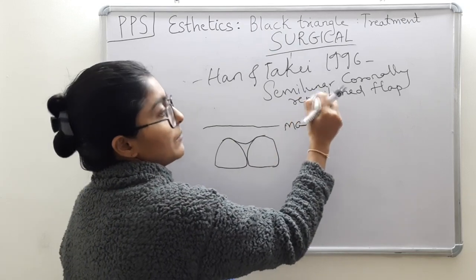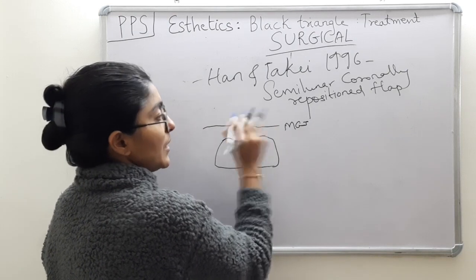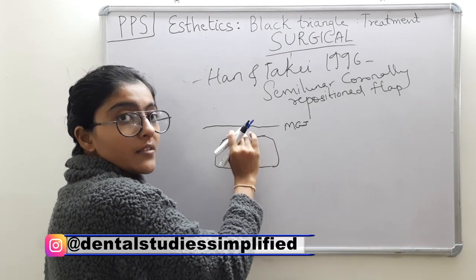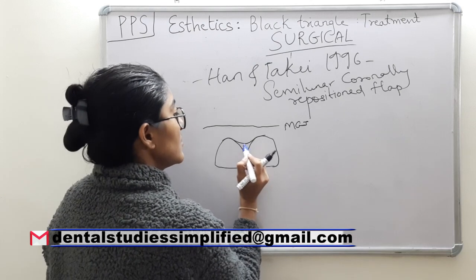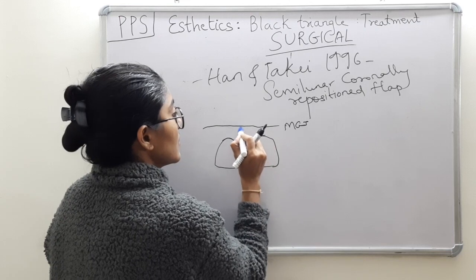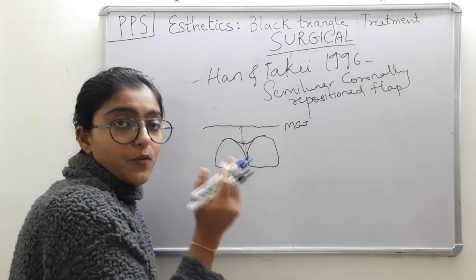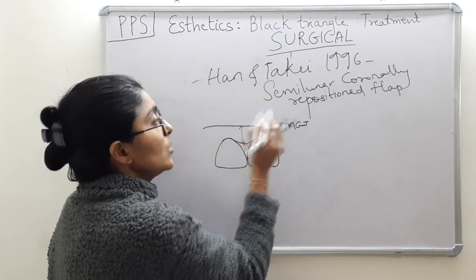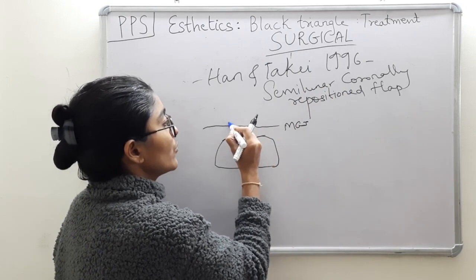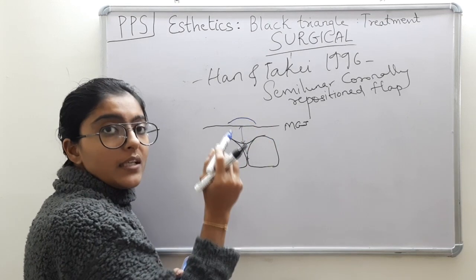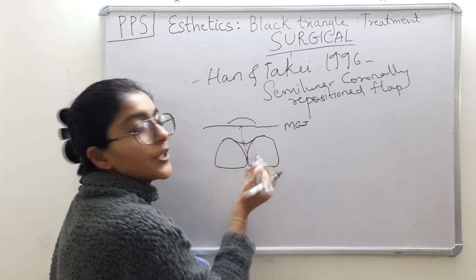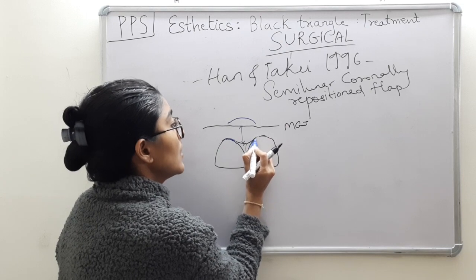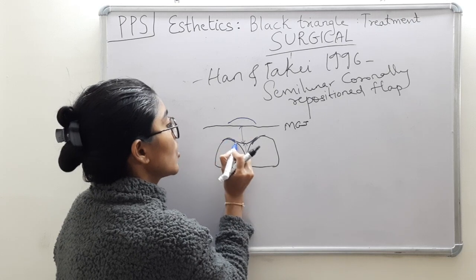The name itself says semilunar coronally reposition, so the incision is a semilunar incision into the alveolar mucosa. There is hardly any space in the attached or keratinized gingiva after which we can do coronal repositioning, so the semilunar incision is given in the alveolar mucosa. As discussed during advanced flaps for root coverage, the distance should be adequate so that the final flap rests on the bone crest. The semilunar incision is connected by intrasulcular incisions on the mesial half and the distal half of the two adjacent teeth forming this embrasure or the loss of interdental papilla tissue.